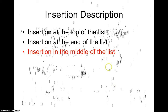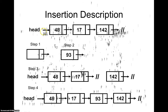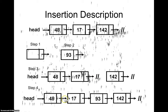Inserting in the middle is a bit more complicated. The steps are: create a node and set the data value as before, then break the pointer connection at the insertion point and reconnect the pointers. For example, we set the pointer of the preceding node to null, then set the newly created node to point to the next node, and finally set that null pointer to point to the newly created node. This inserts the new node at the desired middle position.